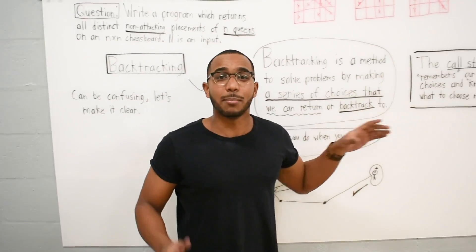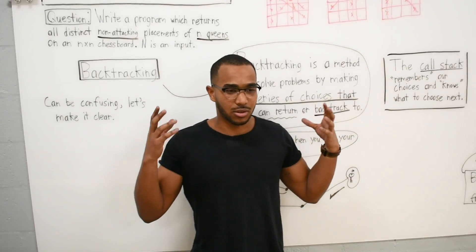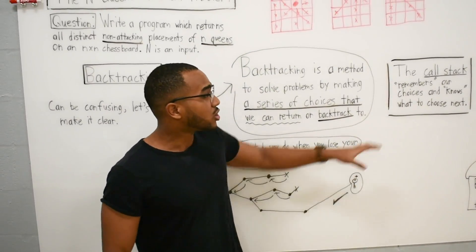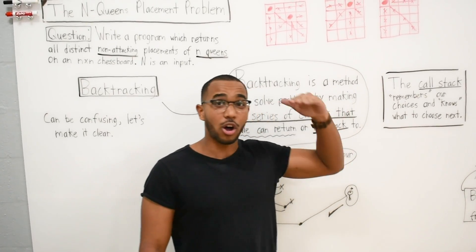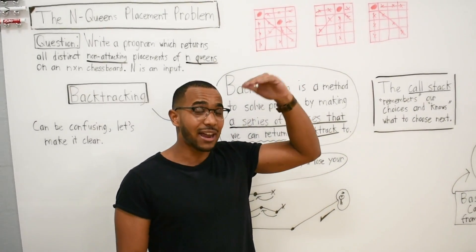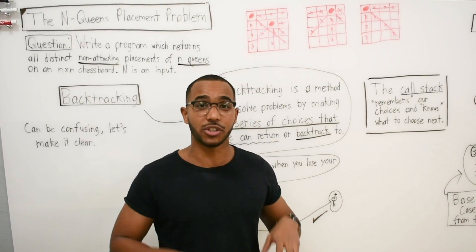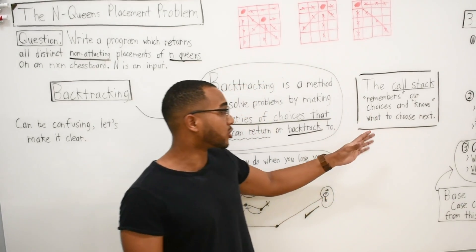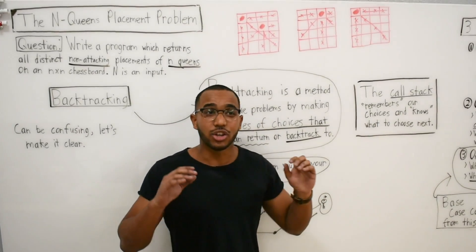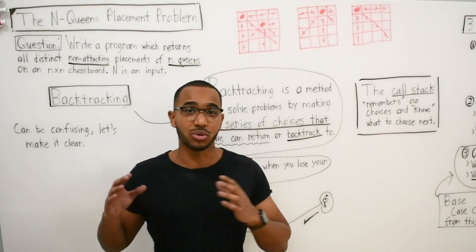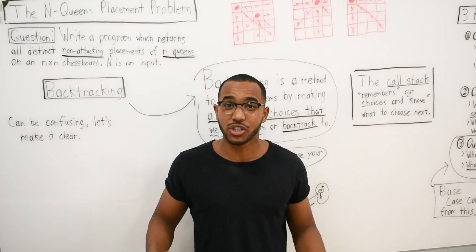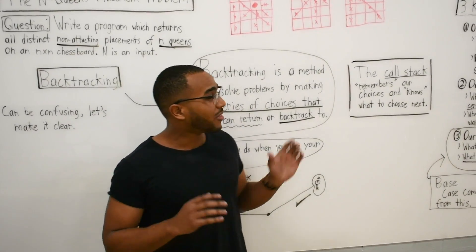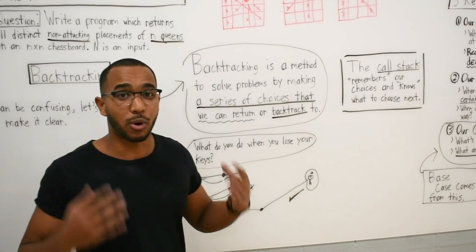So where does the memory come from in your function? It comes from the call stack, where we call functions and remember the state of each function call. The call stack remembers our choices and knows what to choose next. Every call of the function represents a new decision. So with these in mind, let's introduce the problem.